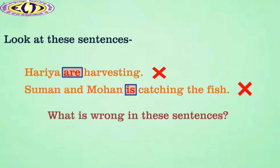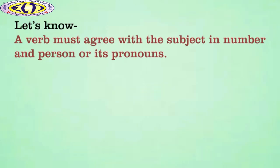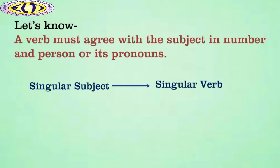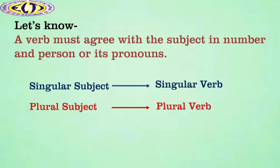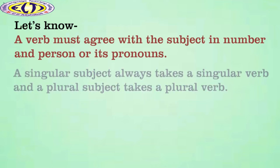So here, we need to learn about the verb agreement with the subject in number and person. A verb must agree with the subject in number and person, or its pronouns. If a subject is singular, its verb must be singular. A singular subject always takes a singular verb, and a plural subject takes a plural verb.